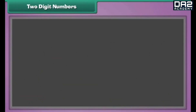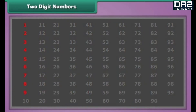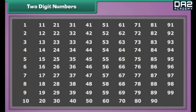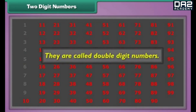Two-digit numbers. The numbers from one to nine have only one digit each. Therefore, they are called single-digit numbers. The numbers from ten to ninety-nine have two digits each. Therefore, they are called two-digit or double-digit numbers.